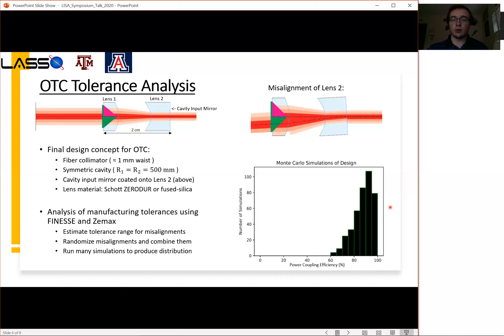Another key aspect to this analysis is keeping a log of the randomized parameters for each run, so that we can take a look at the cases where the coupling efficiency is rather low. We can see which parameters we might need to tighten up and which parameters are more lenient for our purposes. This analysis is continually being done right now using both FINESSE and Zemax.